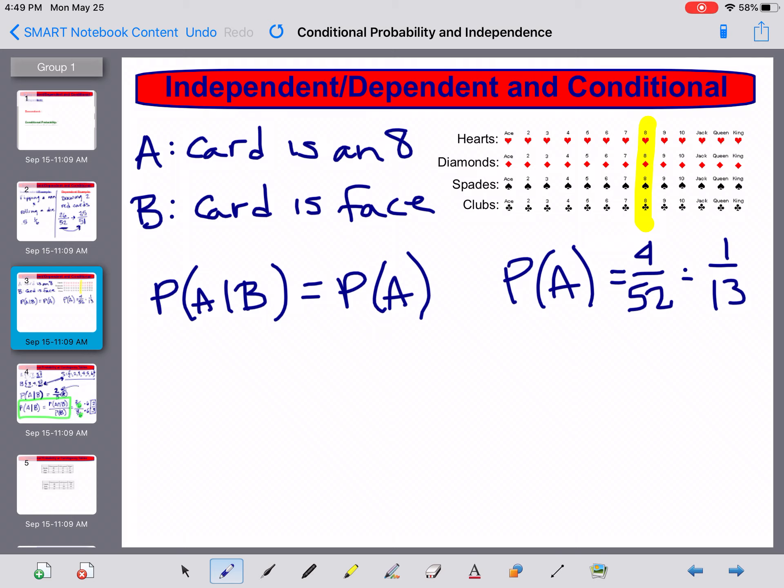So now, in order for this to be independent, I need the conditional probability of A given B to also be 1 over 13. Well, the probability of it being a face card narrows down our world. All of these are my face cards, so given that it's a face card, there's only 12 of those. How many of those can A occur? Well, 8 can't occur because it's outside of that world, so there's nothing there, which is simply just 0. So because these don't have the same probability, these are not independent events. A and B are not independent.